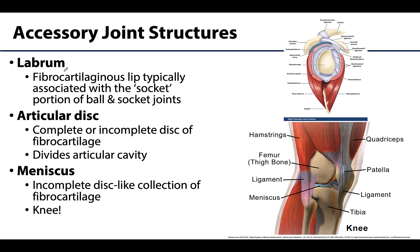A labrum is a lip of fibrocartilage located on the socket part of a ball-and-socket joint — essentially the shoulder and hip joints. This allows for a slightly greater surface area associated with the socket, thus allowing a slightly better fit for the ball portion of the ball-and-socket joint.